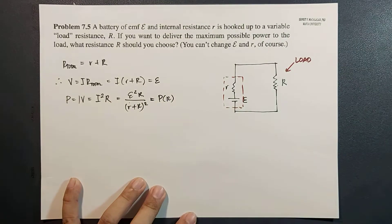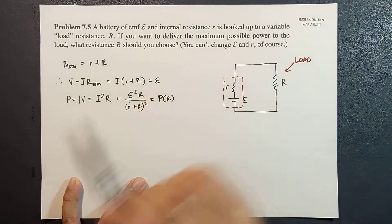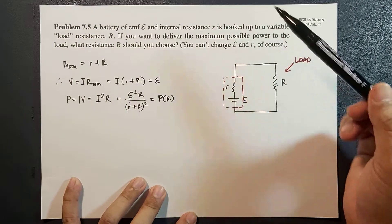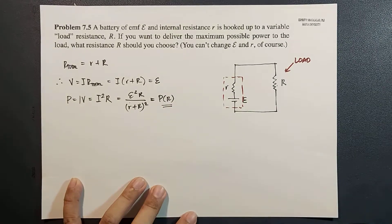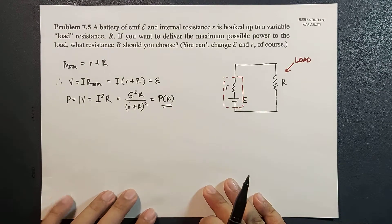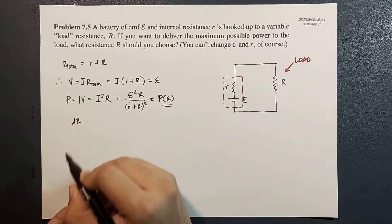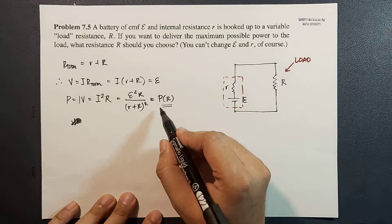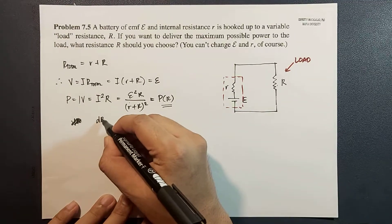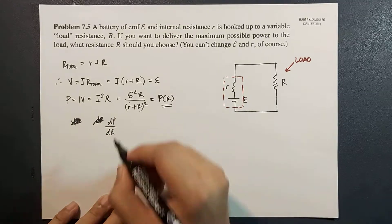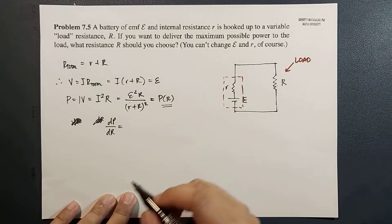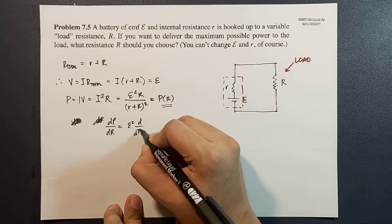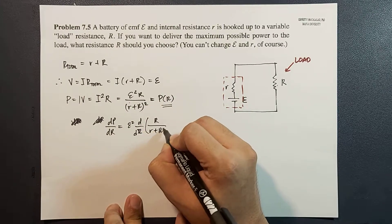We have now expressed power as a function of the load resistance R, because we want to know what value of R gives maximum power delivered to the load. This is an optimization problem. By definition, for power to be maximized we take its derivative with respect to R and set it equal to zero: dP/dR equals epsilon squared times d/dR of [R over (R plus r) squared] equals 0.